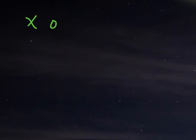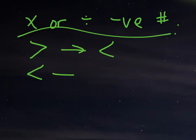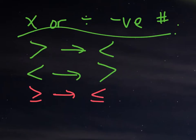Let me just write out what I said, so we're clear. Anytime you are multiplying or dividing by a negative number, the sign is going to switch directions. So if it's a greater than symbol, it becomes less than. If it's less than, it becomes greater than. If it is greater than or equal to, then it becomes less than or equal to. And finally, if it is less than or equal to, it switches to greater than or equal to. It's just switching directions — that's all that's happening.